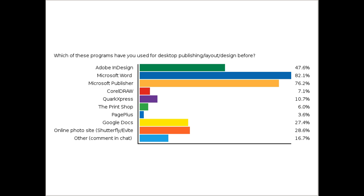So far it looks like the great majority of you have used Microsoft Word and Publisher — not surprising since that's ubiquitous office software. Microsoft Word is not actually a desktop publishing program, but it has some ability to place things on a page. Microsoft Publisher is meant for desktop publishing but is more restricted. Adobe InDesign and other programs designed specifically for desktop publishing offer a lot more flexibility in getting the final output you really want.